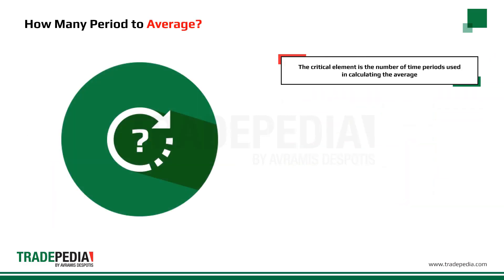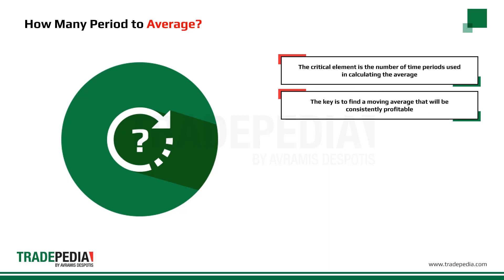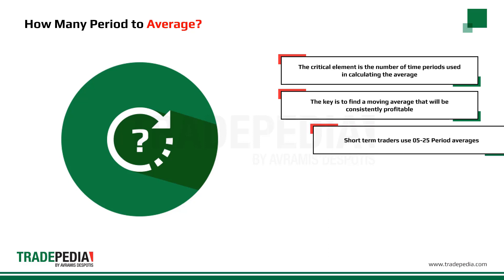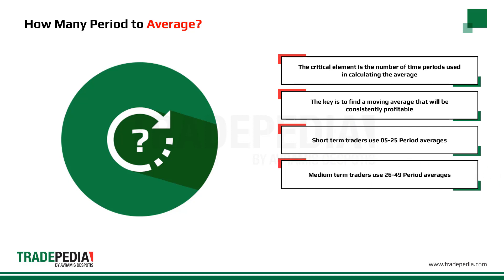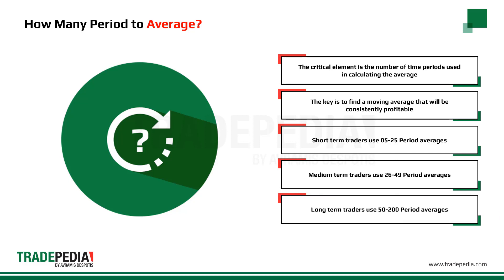The critical element is the number of time periods used in calculating the average. The key is to find a moving average that will be consistently profitable and at the same time fits the market cycle you wish to follow. For example, short-term traders use 5 to 25 period averages, medium-term traders use 26 to 49 period averages, and long-term traders use 50 to 200 period averages.